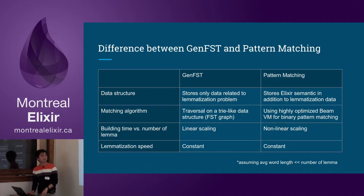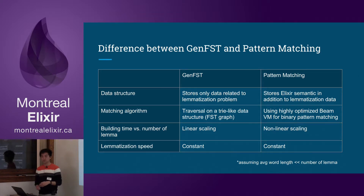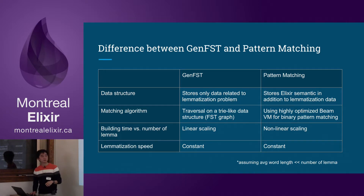So what is the difference between GenFST and pattern matching? GenFST only stores data related to the lemmatization problem — it doesn't store all the Elixir semantics like pattern matching does, so we don't store all those 'def', 'do', parentheses, et cetera. When matching a string, GenFST works in a traversal like a trie-like data structure, similar to how Elasticsearch searches strings. Pattern matching is actually faster than FST because it is highly optimized by the BEAM VM. The main difference is: GenFST gives you linear scaling at build time, while pattern matching doesn't scale well. But in both cases, the lemmatization runtime speed is constant.